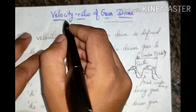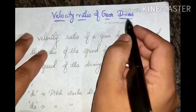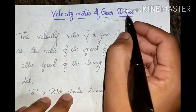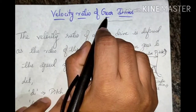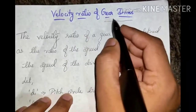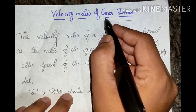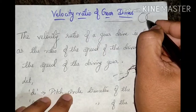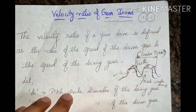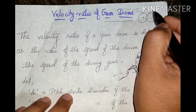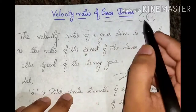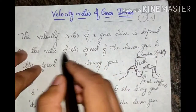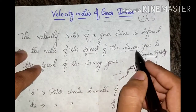Today's topic is the velocity ratio of gear drives. A gear is a toothed wheel which meshes with another gear for transmitting power. Gear drives transmit power from one shaft to the other — one is the driving shaft and the other is the driven shaft. The velocity ratio of the gear drive is defined as the ratio of the speed of the driven gear to the speed of the driving gear.